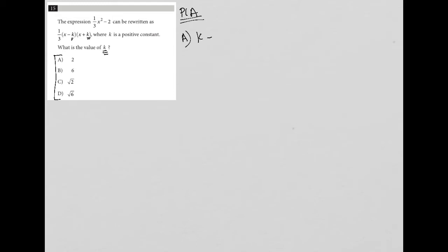For instance, answer choice A says that k equals 2. So what we're going to do is say, is it true that if I plug 2 in for k, x minus 2 times x plus 2, does that equal 1/3 x² - 2? So we can check this out. Maybe you can tell already that it's not going to work, but I'm going to show you that if I FOIL this, I'm going to end up with x² - 4. I still have 1/3 out in front, which means I'd end up with 1/3 x² - 4/3, which is definitely not equal to 1/3 x² - 2.